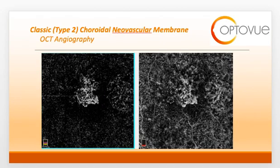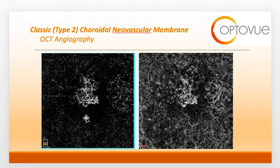Just as OCT angiography is useful for type 1, it is also extremely useful to identify membranes in type 2. The hyper-visible area or net is going to originate in the choriocapillaris slab. However, with a type 2, remember that it is going to go above the level of the RPE, so the outer retinal or avascular slab is going to be affected as well. This is a nice way to differentiate between the two membranes and solidify a diagnosis when you're not sure.